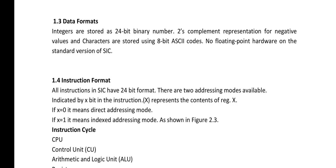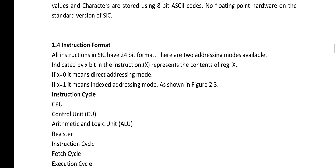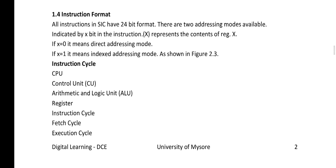The next component of SIC architecture is the instruction format. All instructions in SIC have a 24-bit format. There are 2 addressing modes available, indicated by the X bit in the instruction. X represents the contents of register X. X equal to 0 means direct addressing mode; X equal to 1 means indexed addressing mode. The instruction cycle of the SIC machine architecture includes the CPU, control unit, arithmetic logic unit, registers, instruction cycle, fetch cycle, and execution cycle.